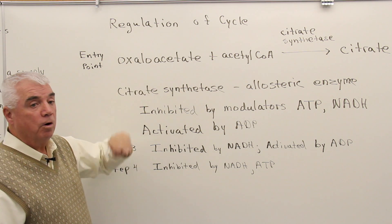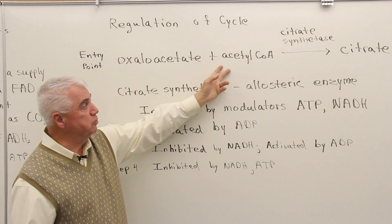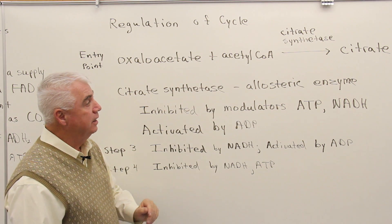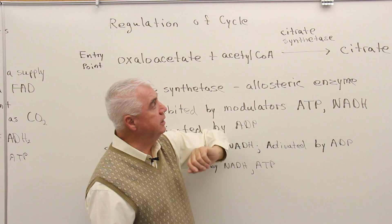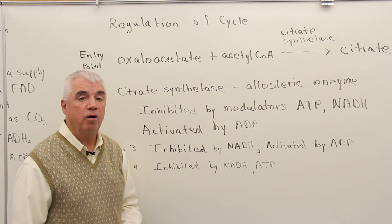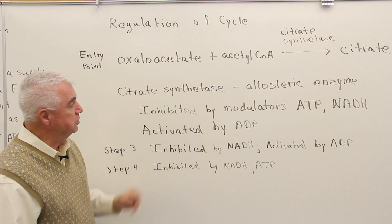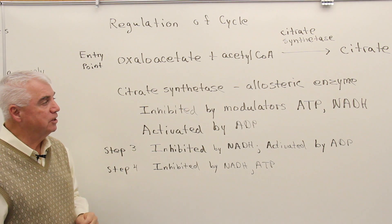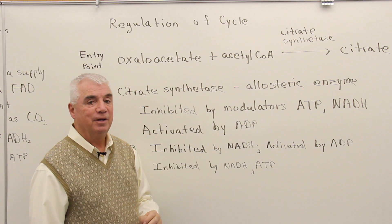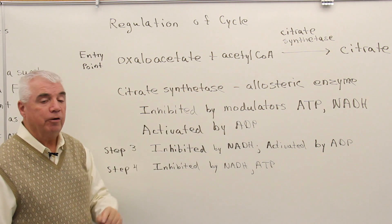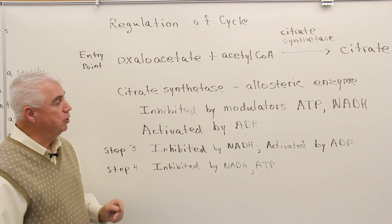At the entry point, C4 oxaloacetate reacts with acetyl-CoA to form C6 citrate. The enzyme involved is called citrate synthetase, an allosteric enzyme. We talked about allosteric enzymes back in the enzyme chapter.